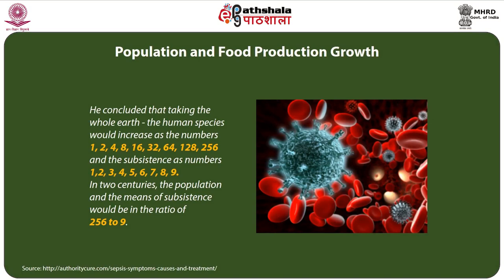He concluded that, taking the whole earth, the human species would increase as the numbers 1, 2, 4, 8, 16, 32, 64, 128, 256, while subsistence would increase as the numbers 1, 2, 3, 4, 5, 6, 7, 8, 9. In that way, the human species would increase in geometrical proportion whereas subsistence increases in arithmetic ratio. In two centuries, the population and the means of subsistence would be in the ratio of 256 to 9.